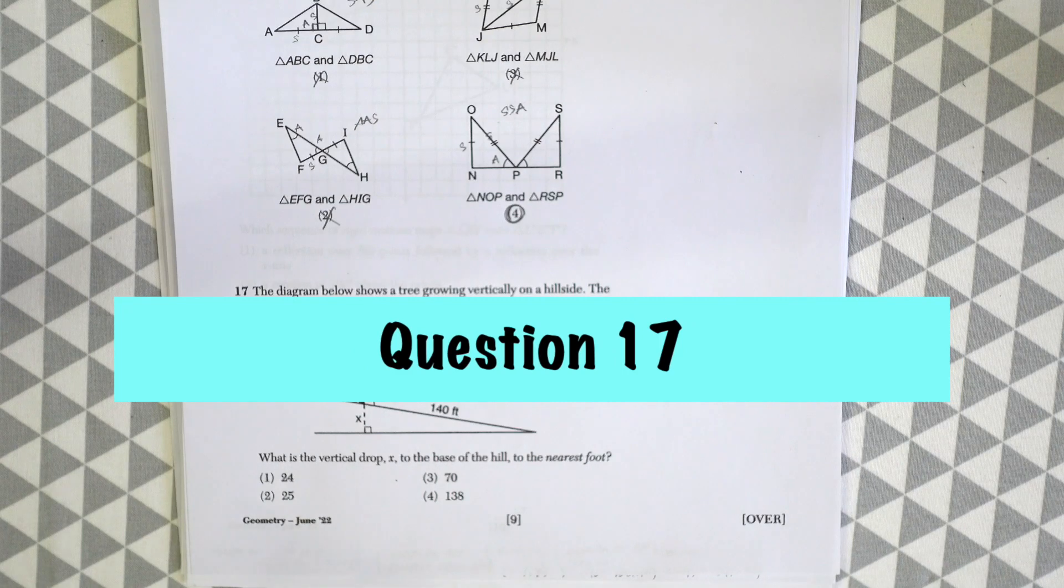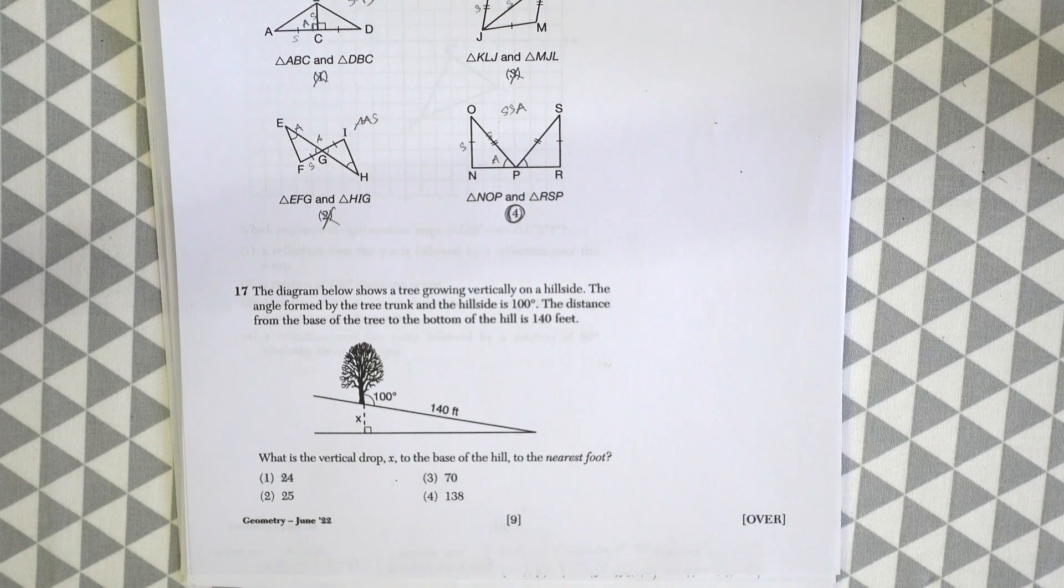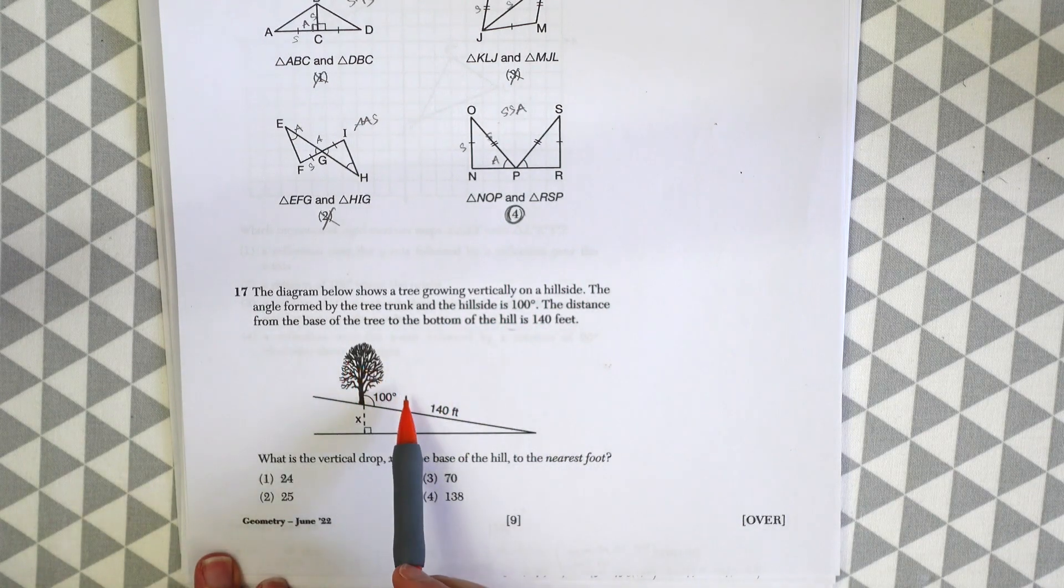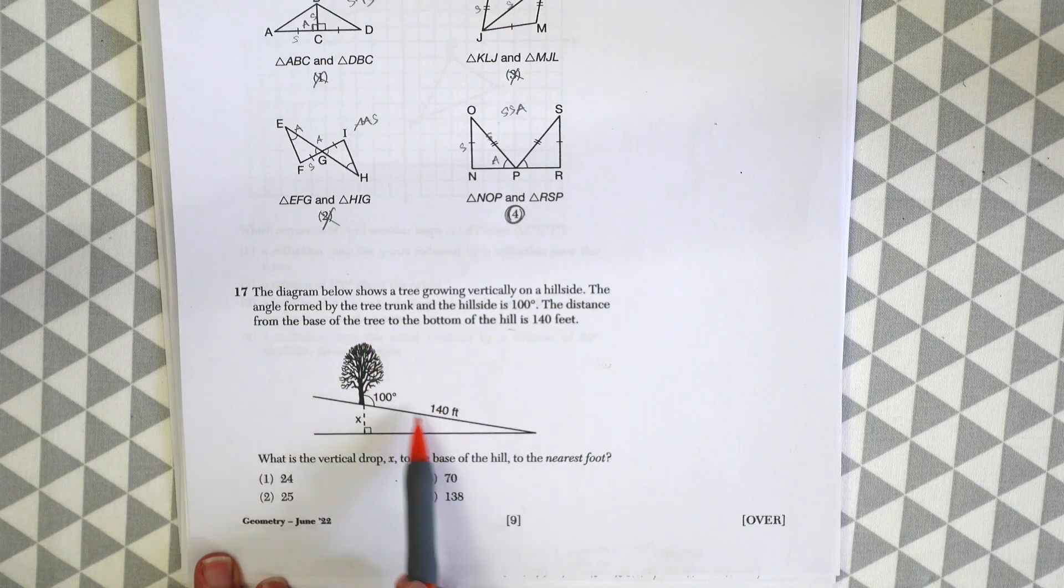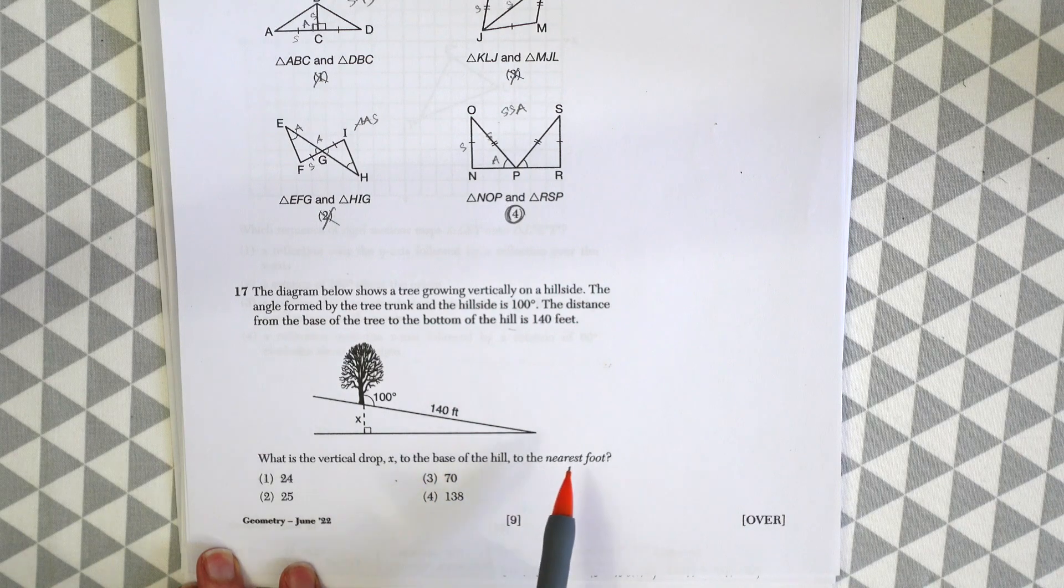On to question 17. The diagram below shows a tree growing vertically on a hillside. The angle formed by the tree trunk and the hillside is 100 degrees. The distance from the base of the tree to the bottom of the hill is 140 feet. What is the vertical drop X to the base of the hill to the nearest foot?